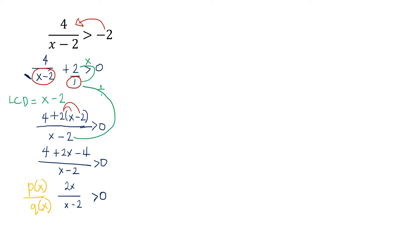After satisfying the two conditions, the next step is to equate both the numerator and denominator to 0. The purpose is to get the critical values of the solution set. So we have 2x equals 0, and x minus 2 equals 0.